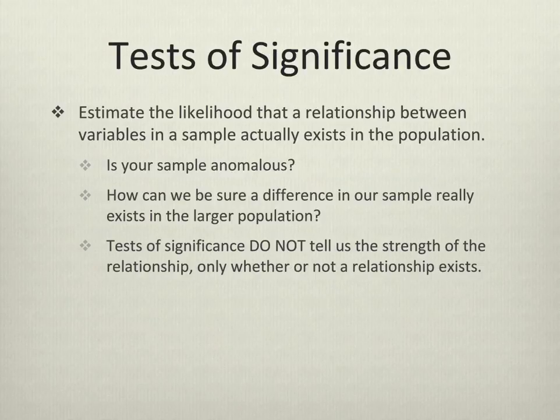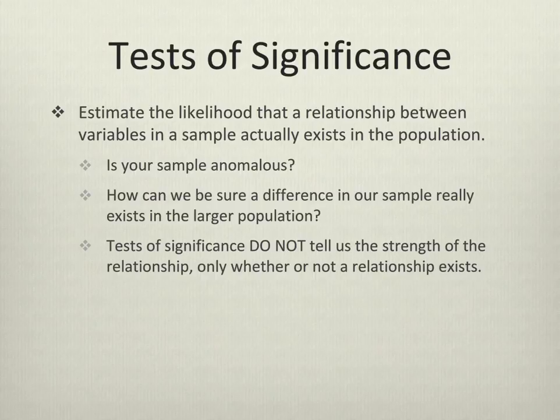Tests of significance estimate the chances that a relationship you find in your sample actually exists in the larger population. Your sample could be anomalous. Can we ever be truly sure that what we find in our sample really exists in the larger population? Some would argue that in theory we can't. But with inferential statistics, we can make an educated guess. This is also why most studies are repeated. We generally don't accept the findings of one study as gospel, but rather expect quite a few studies to confirm findings.